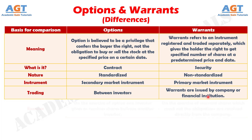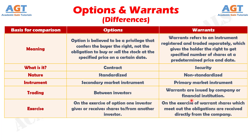Number 6: when a stock option is exercised, one investor gives or receives shares to or from another investor. On the contrary, when a warrant is exercised, shares which meet the obligations are received directly from the company.